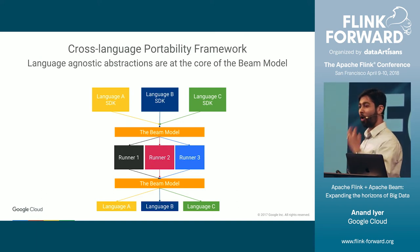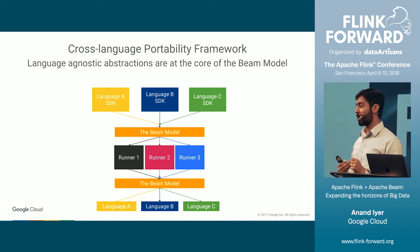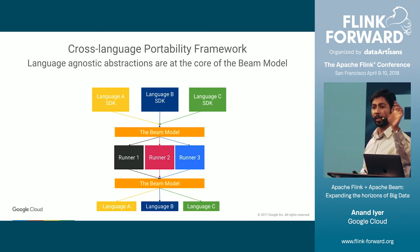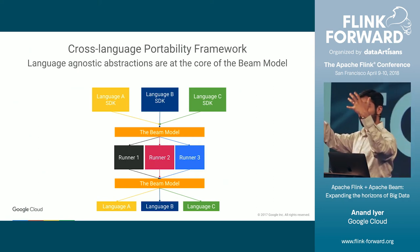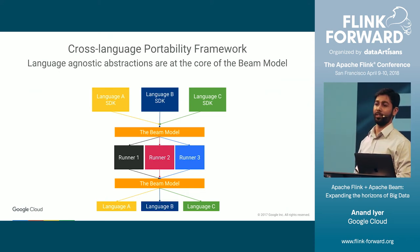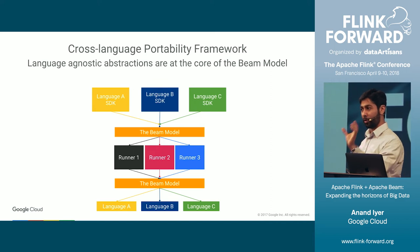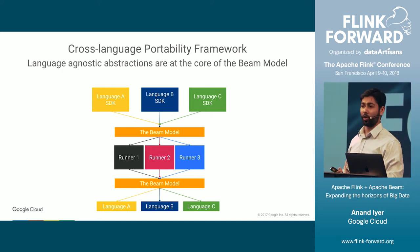Why does this matter to you as an end user? It matters because this enables multiple language SDKs without compromise. All the language SDKs go through the same framework, so they uniformly leverage the capabilities of the runners. Every SDK gets uniform functionality, the same robustness, and the same scalability. If you're using a non-JVM SDK, you don't have to worry that it is a compromise over the Java SDK. You can use multiple languages without compromise.